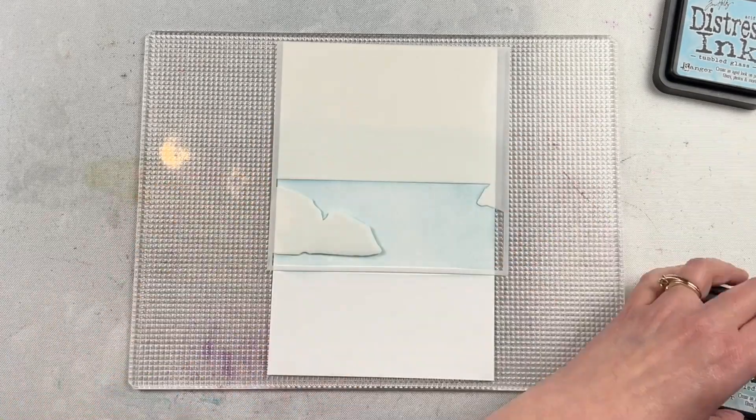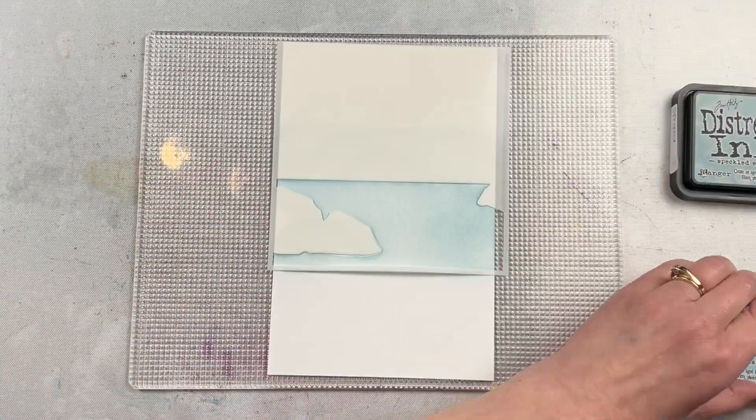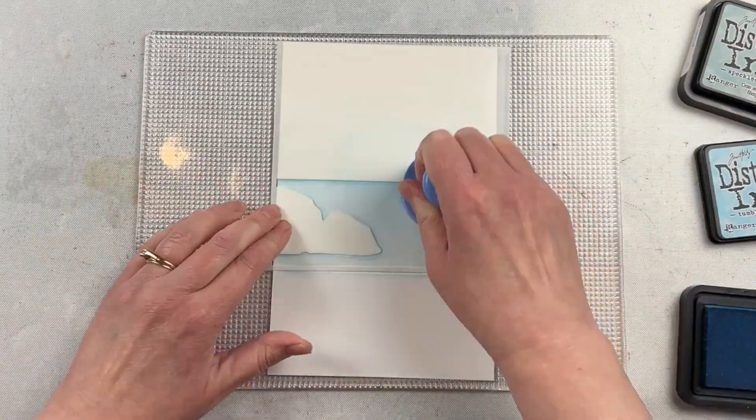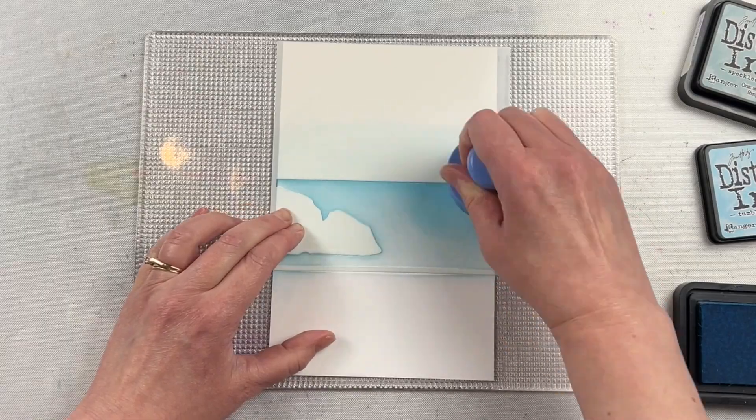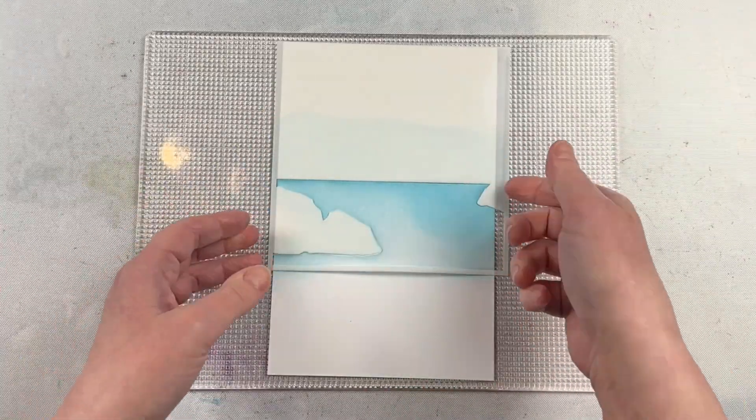I like to use large ink blending brushes when I'm using this stencil. Here I'm working on a sticky mat to help hold that stencil down, but you can easily tape it in place or you could also use something like pixie spray or a temporary adhesive on the back of your stencil.